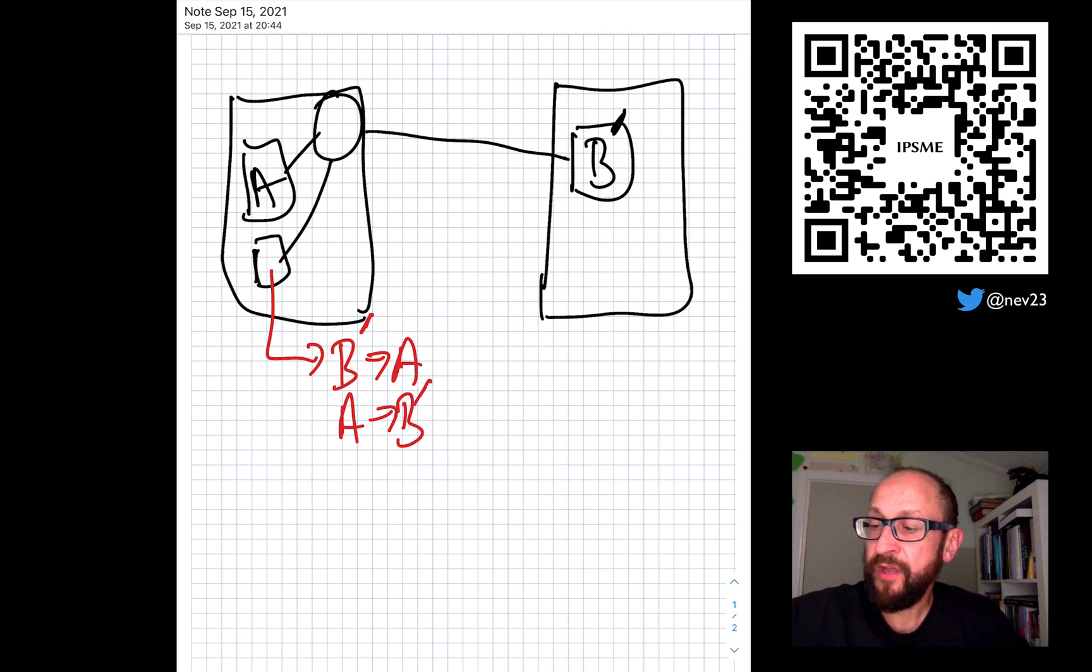Or what could happen is that instead of updating the translation, we could add another translation which then does B prime to A to B prime. This allows for backwards compatibility with any other system that would still be speaking protocol B.